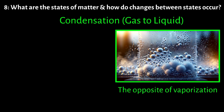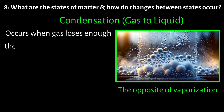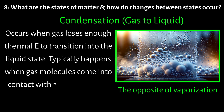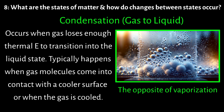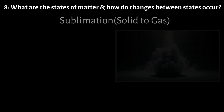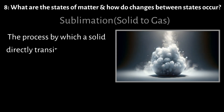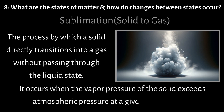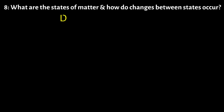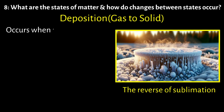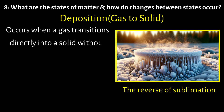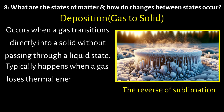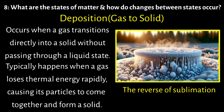Condensation is the opposite of vaporization — it occurs when a gas loses enough thermal energy to transition into its liquid state, typically when gas molecules come into contact with a cooler surface or when gas is cooled. Sublimation is the process by which a solid directly transitions into a gas, bypassing the liquid state. It occurs when the vapor pressure of the solid exceeds atmospheric pressure at a given temperature. Deposition is the reverse of sublimation, occurring when a gas transitions directly into a solid without passing through the liquid state.